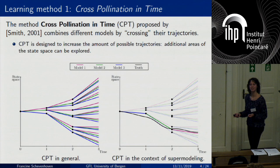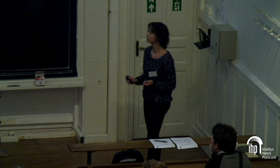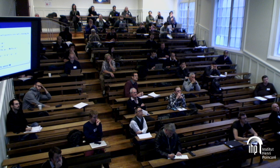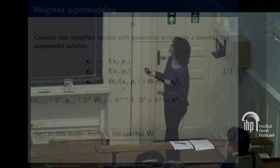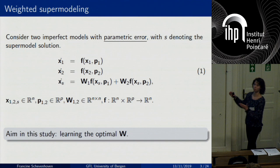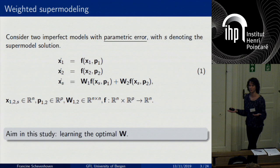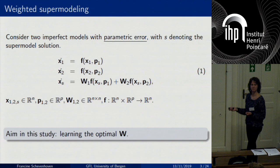For clarification on the weight matrix dimensions: if you have state variables like temperature and vorticity, you can have different weights for them. W is a diagonal matrix with the weights on the diagonal. W1 and W2, each of them, are N by N.